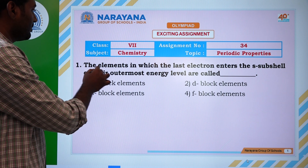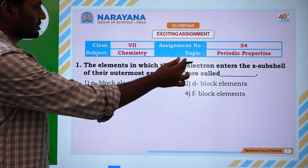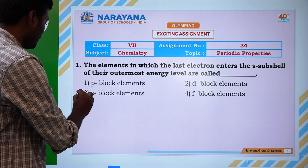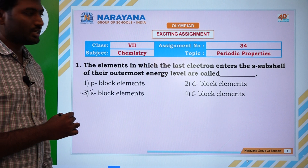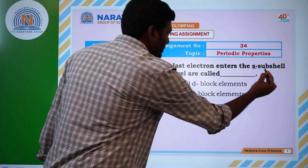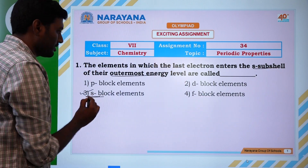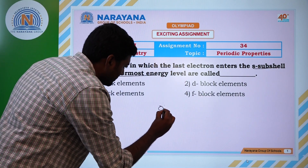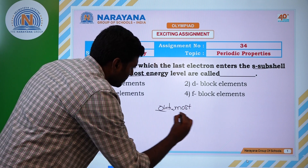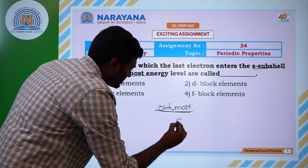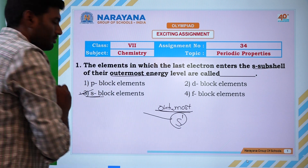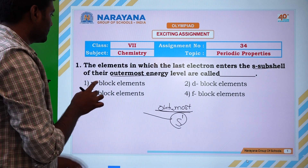First one: the elements in which the last electron enters the S-subshell of their outermost energy level is called as S-block elements. Whenever the outermost energy level is the S-subshell, that element belongs to S-block. If the electron enters into an S-subshell, that element belongs to S-block.